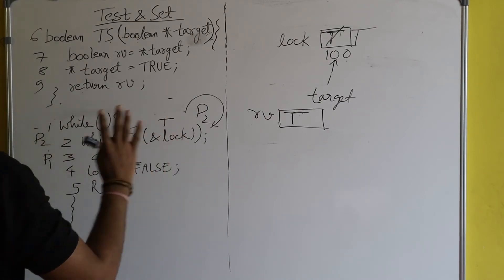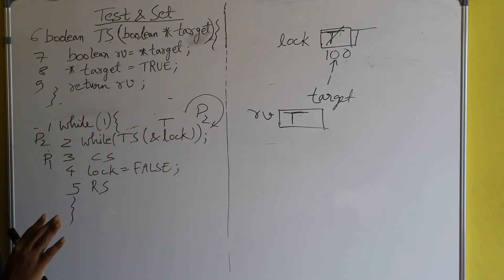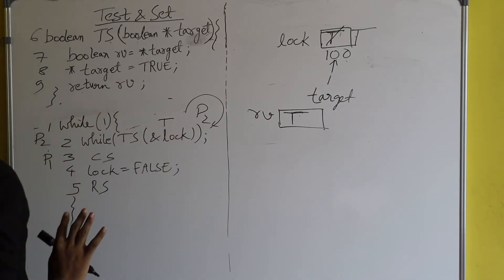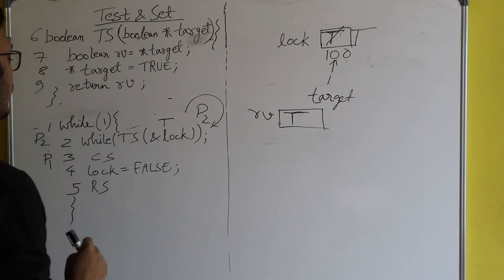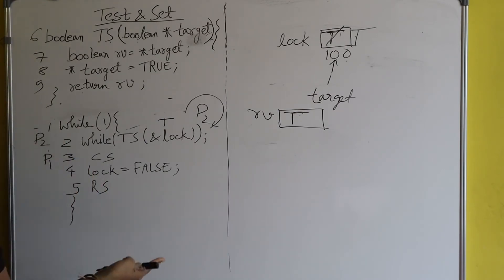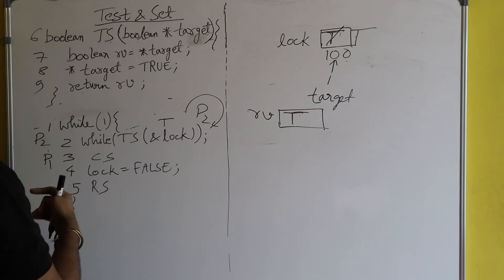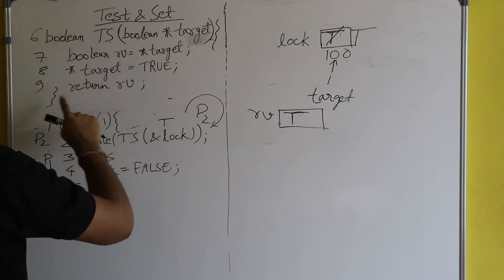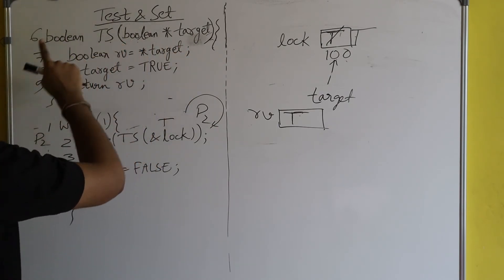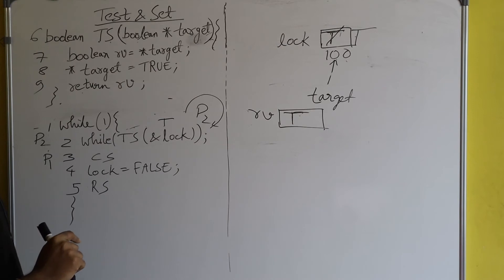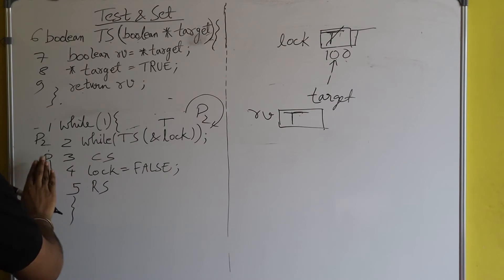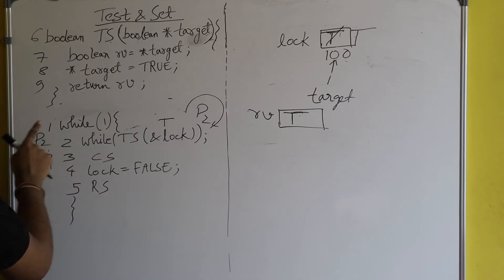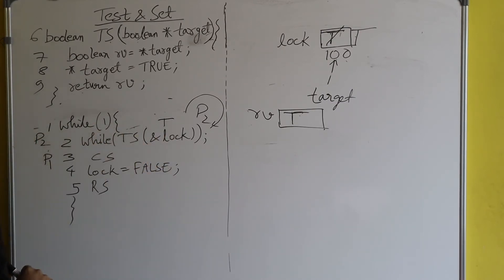There is no chance for violation of mutual exclusion here. Mutual exclusion is definitely guaranteed because test-and-set instructions are atomic instructions.